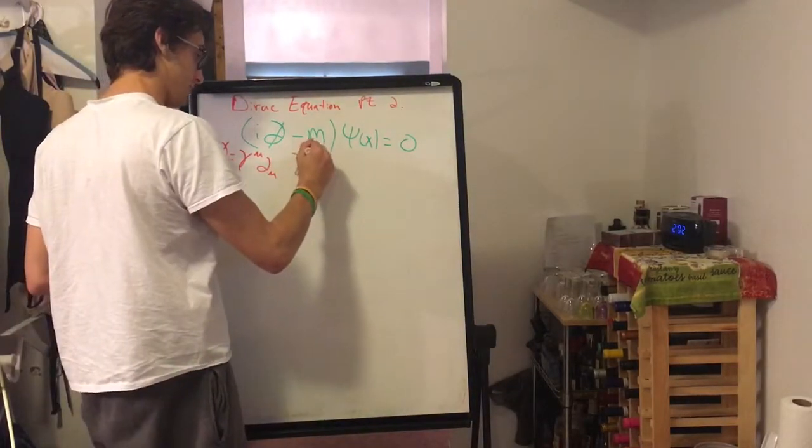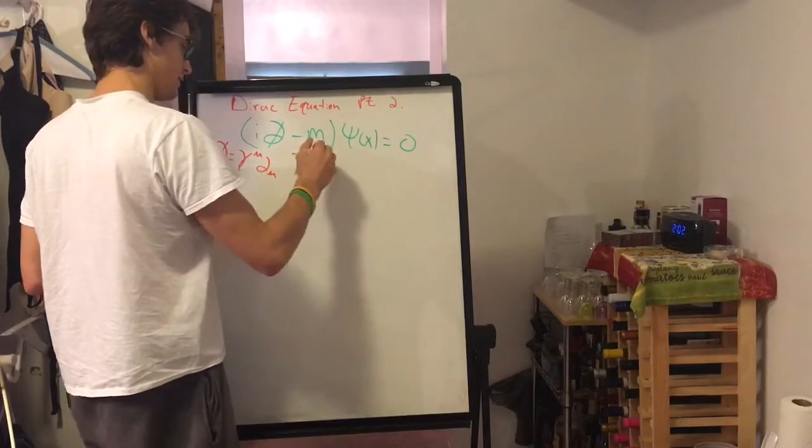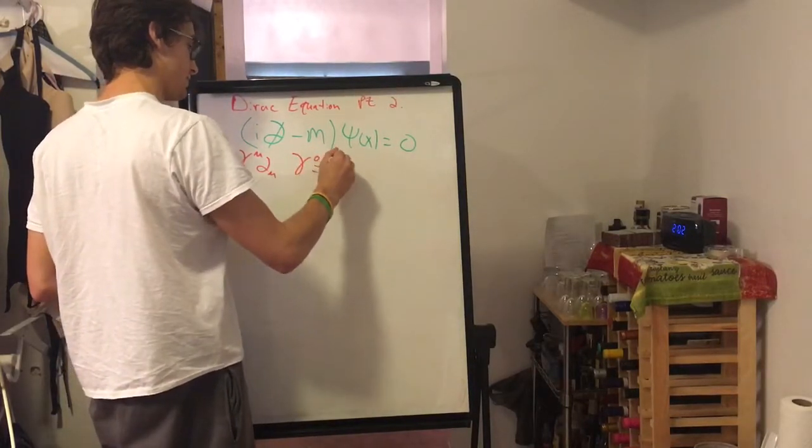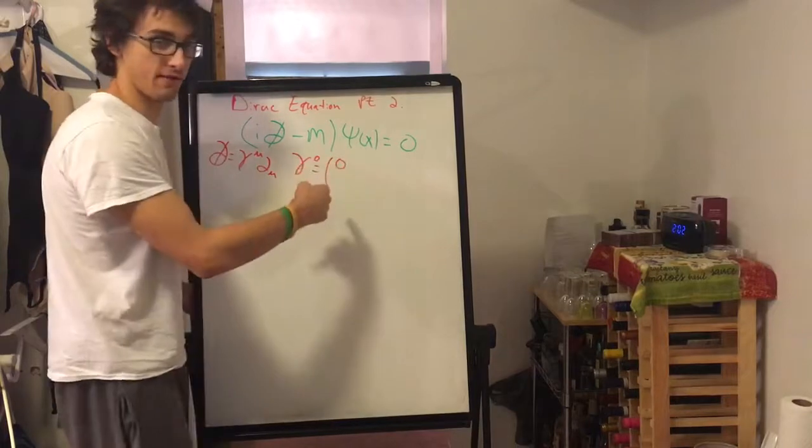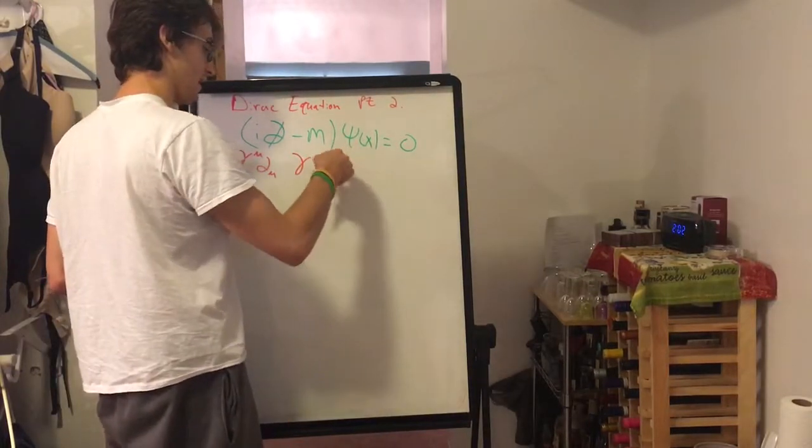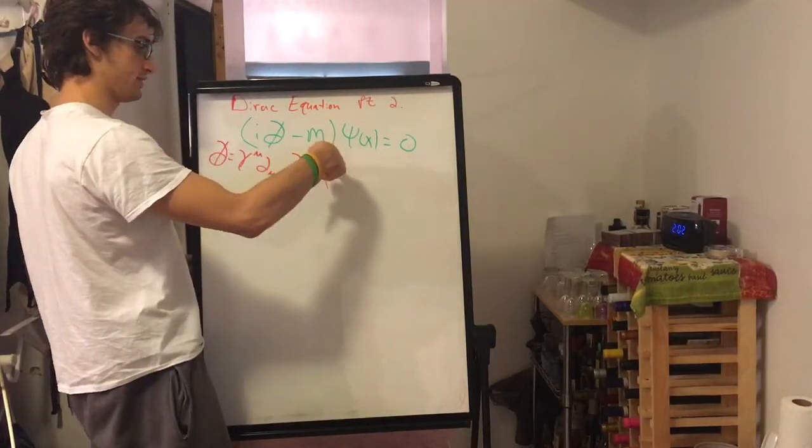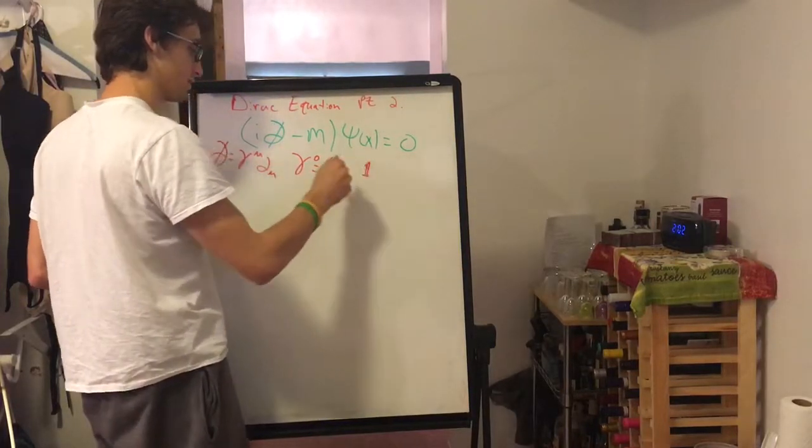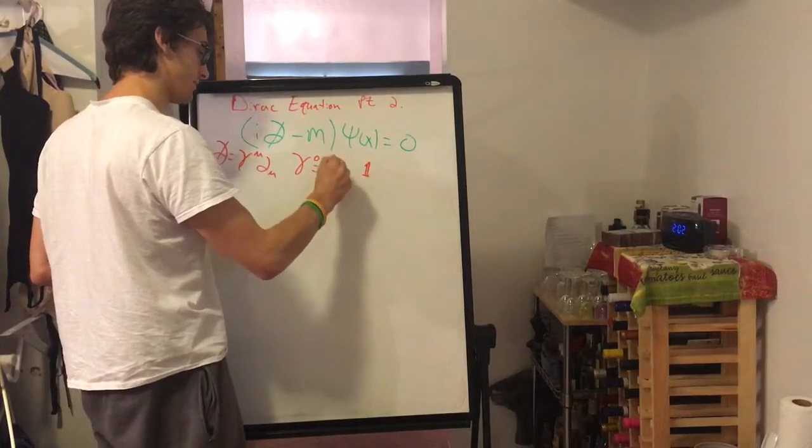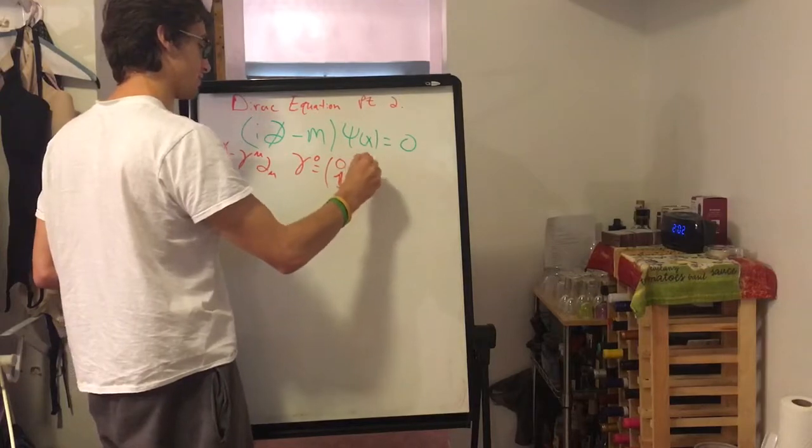So for example, the time component of the gamma matrix is a four by four matrix. And in this section, two by two is zero. This section, we have the identity matrix, the identity matrix and zero.